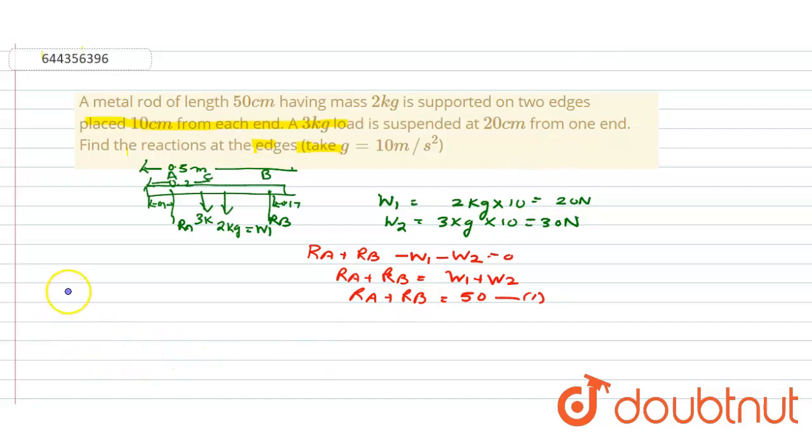So the torque equation we'll use at point A. Tau at A is equal to 0. So W2 into 0.1 plus W1 into 0.15